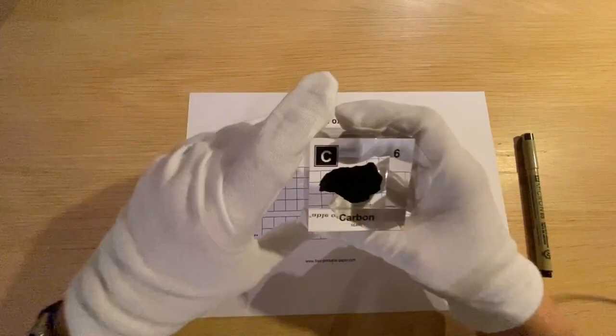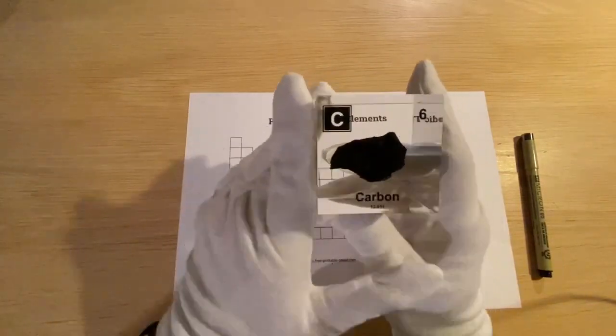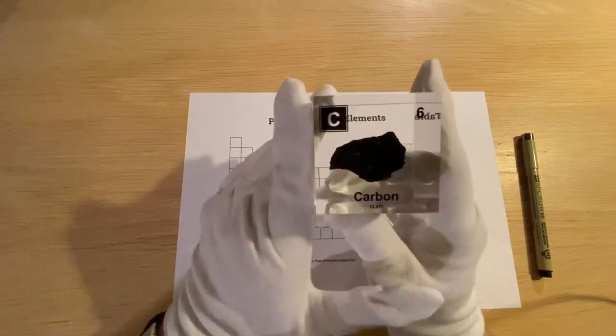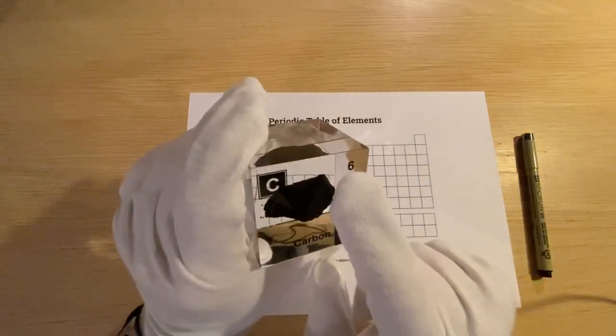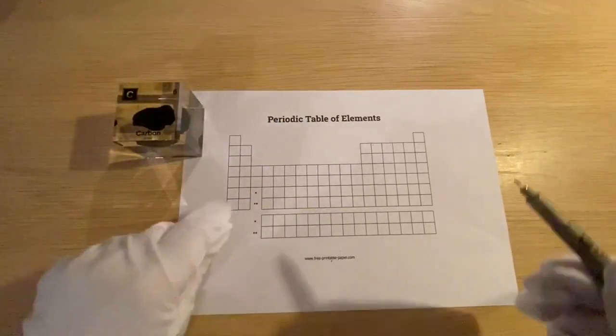Now you may guess how many protons this specific element has. This is element number six, which is carbon, and carbon basically has six protons. And that's how we use the periodic system.